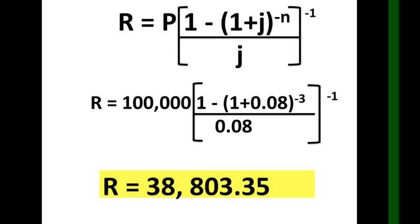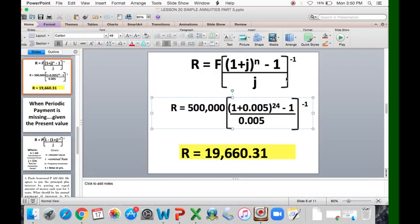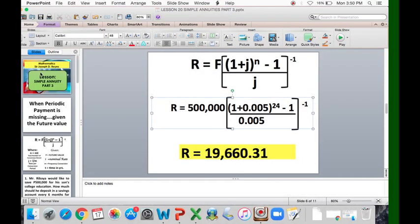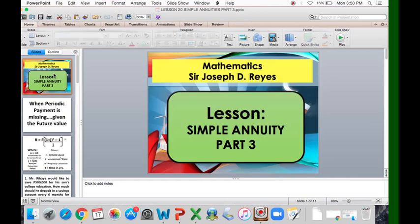That's all about Simple Annuity Part 3 — simple annuity when the periodic payment is missing, given the future value and also the present value. Don't forget to like, subscribe, and share this video for more updates. Bye!